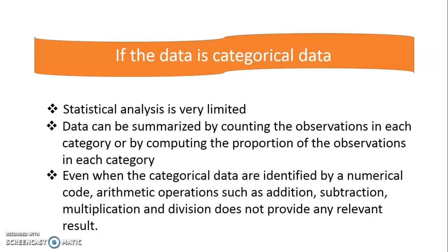Categorical data may be identified by a numerical code, but arithmetic operations like addition, subtraction, multiplication, or division cannot provide any meaningful result. So if the data is categorical, we cannot summarize it in a very effective manner — we can only provide counts or proportions of the observations.